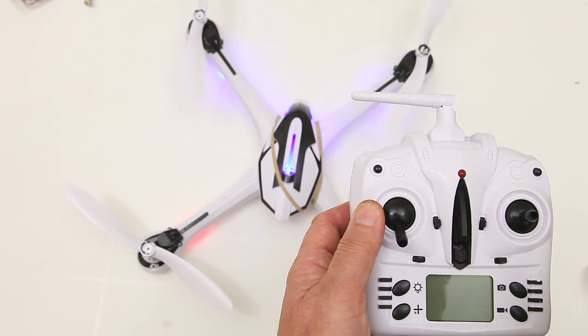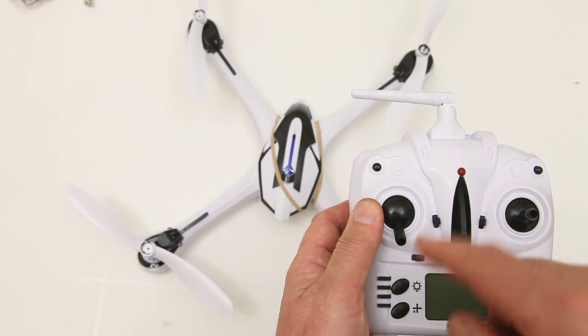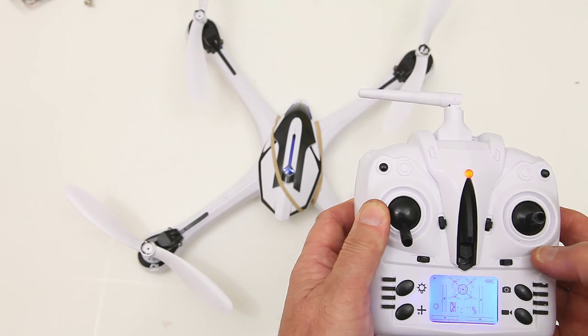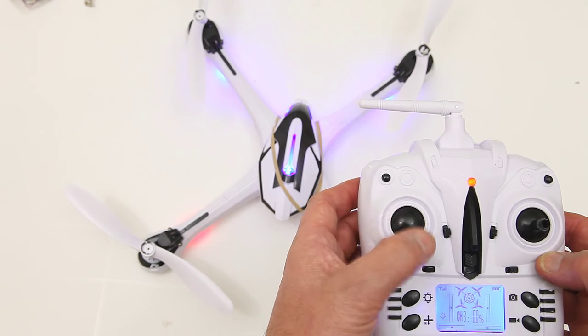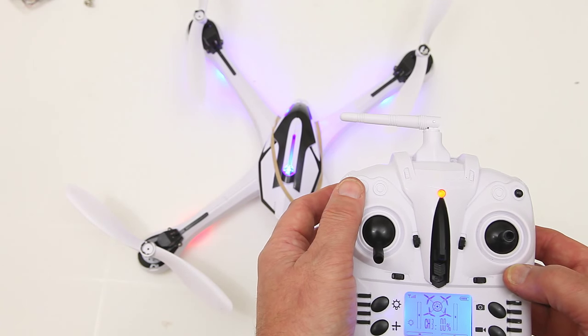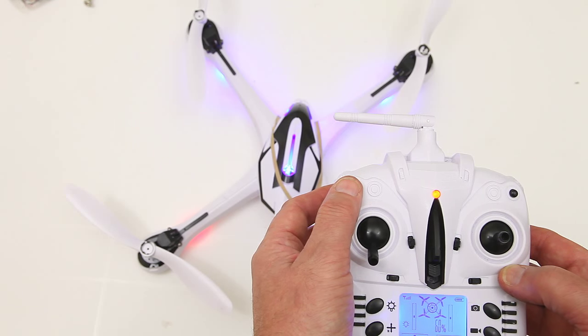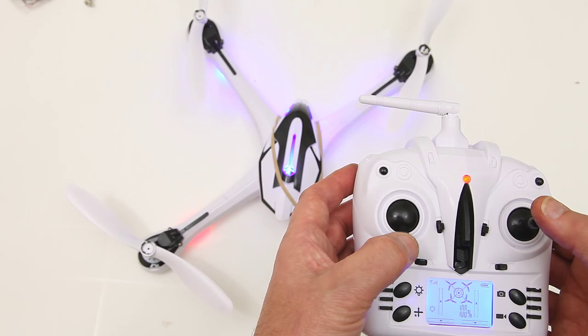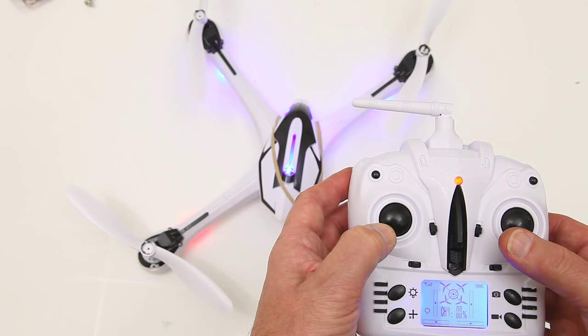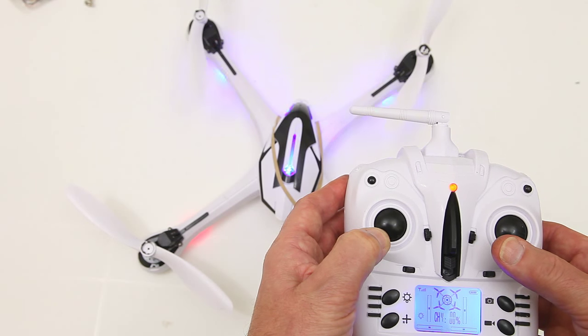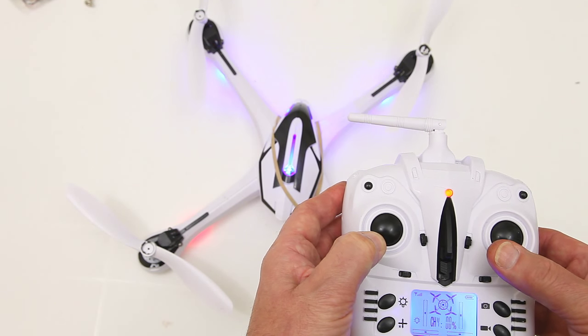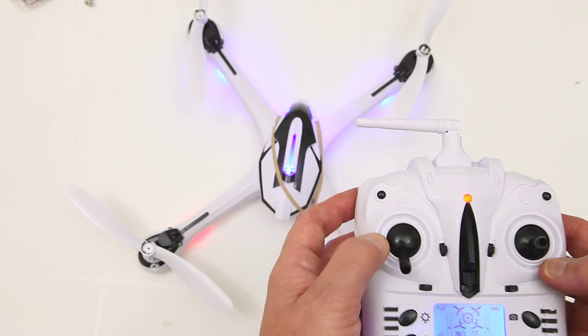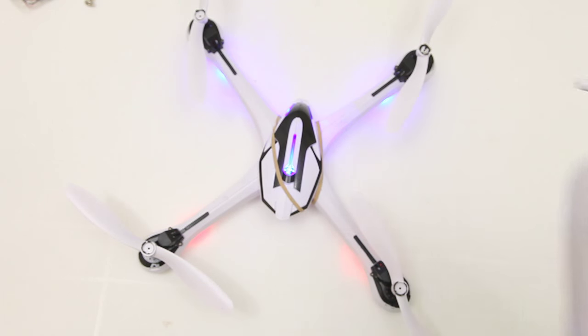To calibrate the accelerometer on the Tarantula, first of all turn it on and bind. Take it up to 100% by pressing this twice, and then literally just go over into the corners, bottom left hand on both, and you get the flashing LED. That should have calibrated the accelerometer.